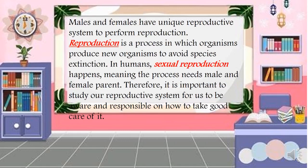Males and females have a unique reproductive system to perform reproduction. Reproduction is a process in which organisms produce new organisms to avoid species extinction. In humans, sexual reproduction happens, meaning the process needs both a male and female parent. Therefore, it is important to study our reproductive system.